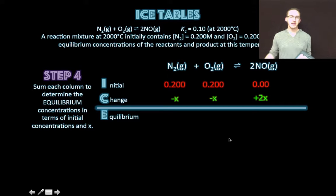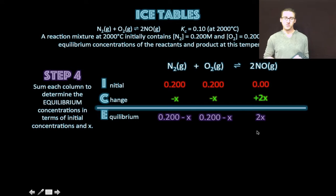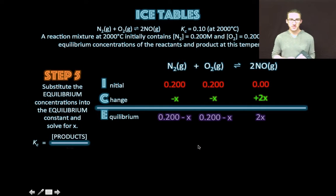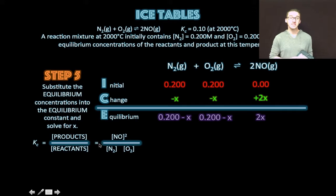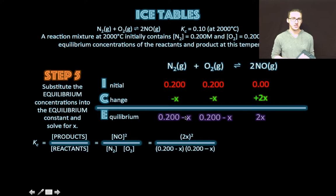Step four: sum each column to determine equilibrium concentrations. Equilibrium concentrations of N2 and O2 are 0.200 minus X; equilibrium concentration of NO is 2X. Step five: substitute the equilibrium concentrations into the equilibrium constant expression and solve for X. Again, equilibrium constant equals concentration of products over concentration of reactants. Always write this out — even when you're under pressure on a test. Always. Then plug in your equilibrium concentrations from your ICE table.